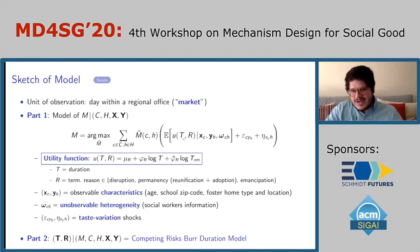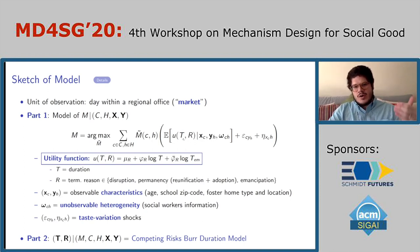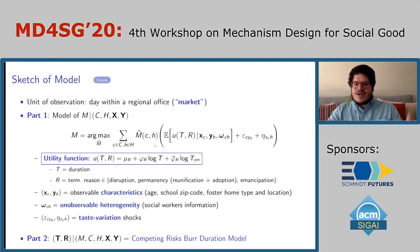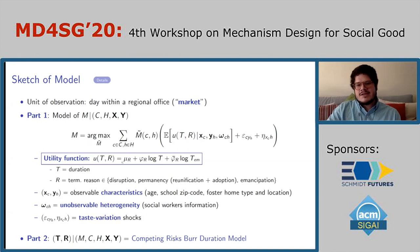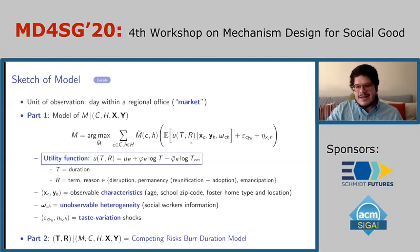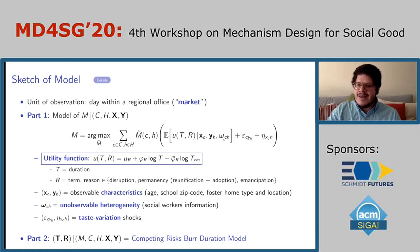Outcomes are lotteries — when we assign a child to a foster home, we don't know what's going to happen, how long the child will stay there, whether the placement will be disrupted, or whether the child will exit the system at the end of a placement. The main object of interest is the utility over placement outcomes, which measures the preferences social workers have over distinct termination reasons and how they value the duration of a placement. Importantly, the model accounts for the fact that social workers may have different information than we have — they observe characteristics and also have access to unobservable heterogeneity.